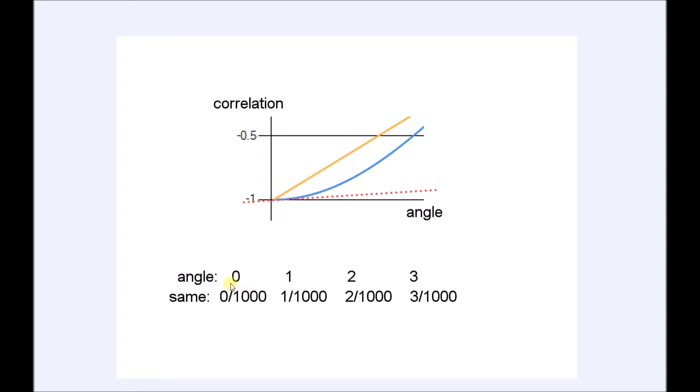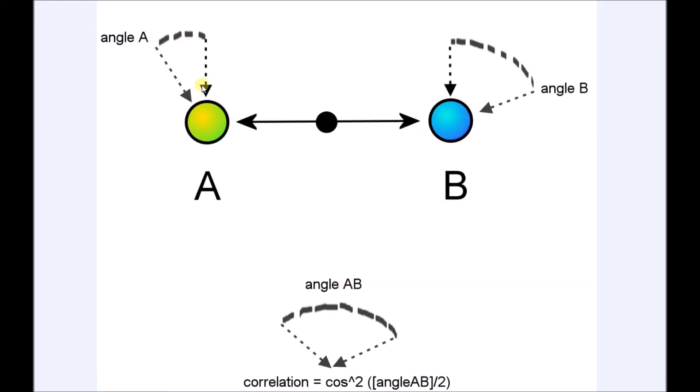Let's assume for example that when the angle changes by 1 degree, only 1 in 1000 values changes from being different to being the same. This goes for measurements where the angle at A is 0 degrees and the angle at B is 1 degree.